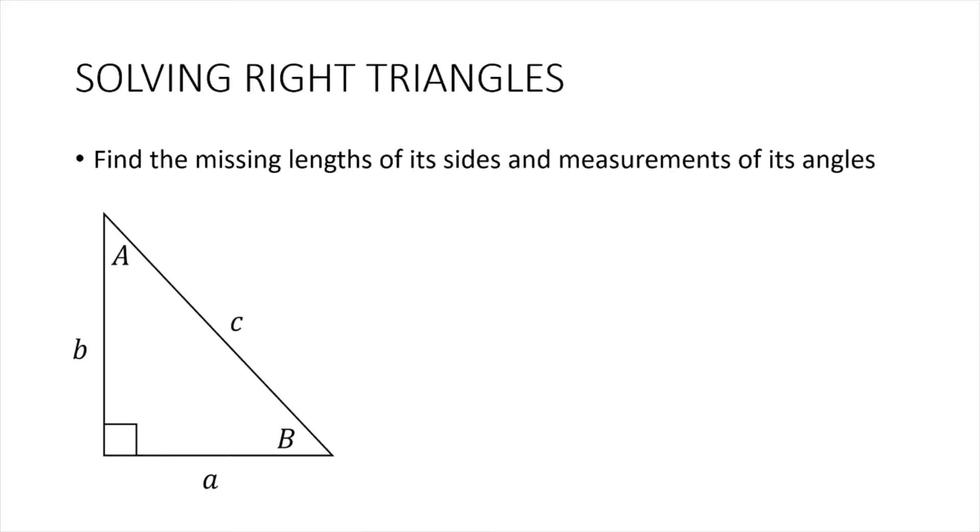To find the missing lengths and angles, we will still be needing the trigonometric functions, and then two other equations: the Pythagorean theorem, and then the equation A plus B equals 90 degrees.